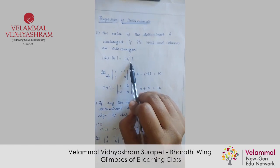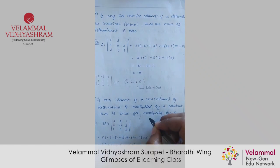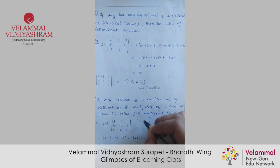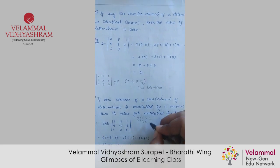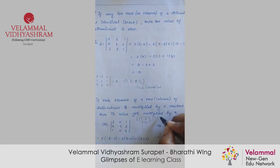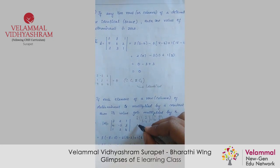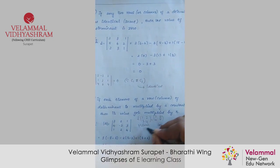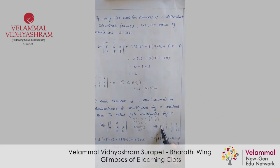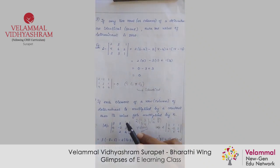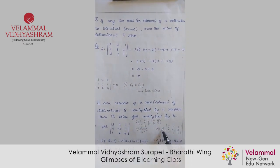If we multiply any matrix — for example, multiplying the matrix by 2, we multiply all the elements, so the matrix becomes 2, 4, 6, 8. This is the matrix case. But in a determinant, if I want to multiply by 2, I can take it out from only any one row or any one column.